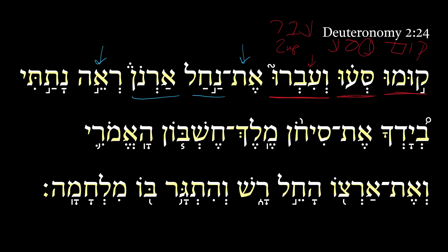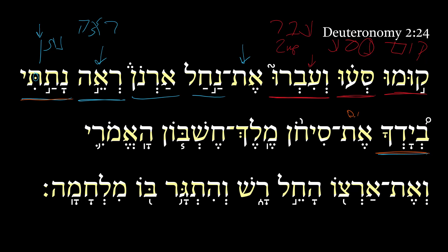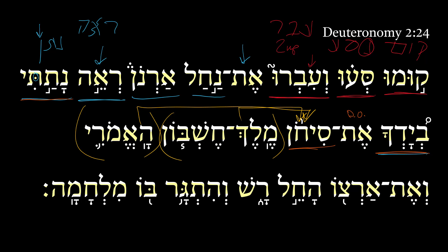Another imperative comes in here: the qal imperative 2ms of the root ra'a, which functions similarly to something like a hene — so we get 'behold' or 'look.' Then: 'I have given into your hand.' The verb here is the qal perfect 1cs of the root natan — notice the third nun is represented by the dagesh there. Sihon is further defined appositionally as the king of Heshbon and the Amorite. A second direct object is listed as his land: I have given into your hand Sihon and his land.